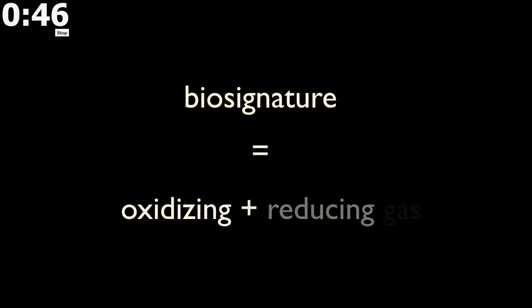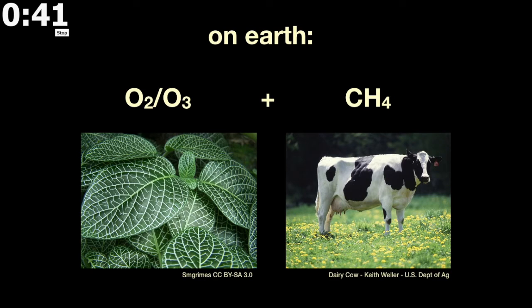How could we detect these on another planet though? Well, that's where biosignatures come in. Biosignatures are, by definition, the combination of an oxidizing plus a reducing gas. On Earth, that would be something like oxygen or ozone in combination with methane.